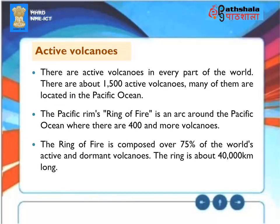Active Volcanoes: There are active volcanoes in every part of the world — about 1,500 in total — and many of them are located in the Pacific Ocean. The Pacific Rim's Ring of Fire is an arc around the Pacific Ocean containing 400 or more volcanoes. The Ring of Fire is comprised of over 75% of the world's active and dormant volcanoes and is about 40,000 kilometers long.